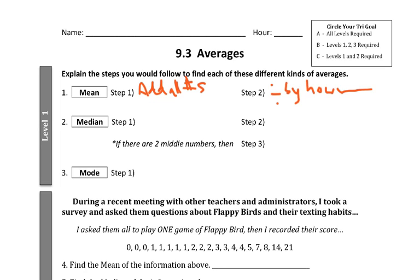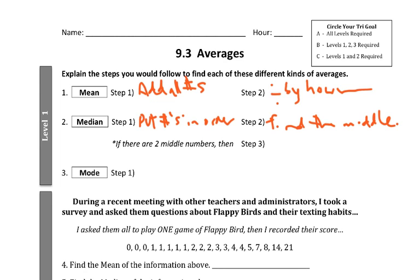The median — to do that, you would put the numbers in order, and then you would need to find the middle. Sometimes the middle is going to be a specific number. Sometimes it's going to be between two numbers. And if that were the case — if there are two middle numbers — then you would need to find the mean of those two numbers. In other words, you would add those two numbers together and divide by two.